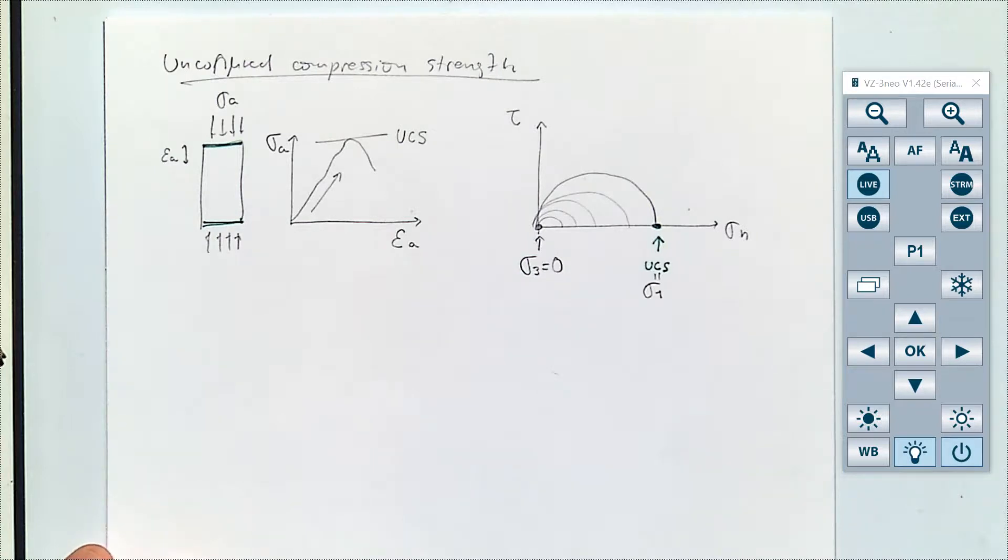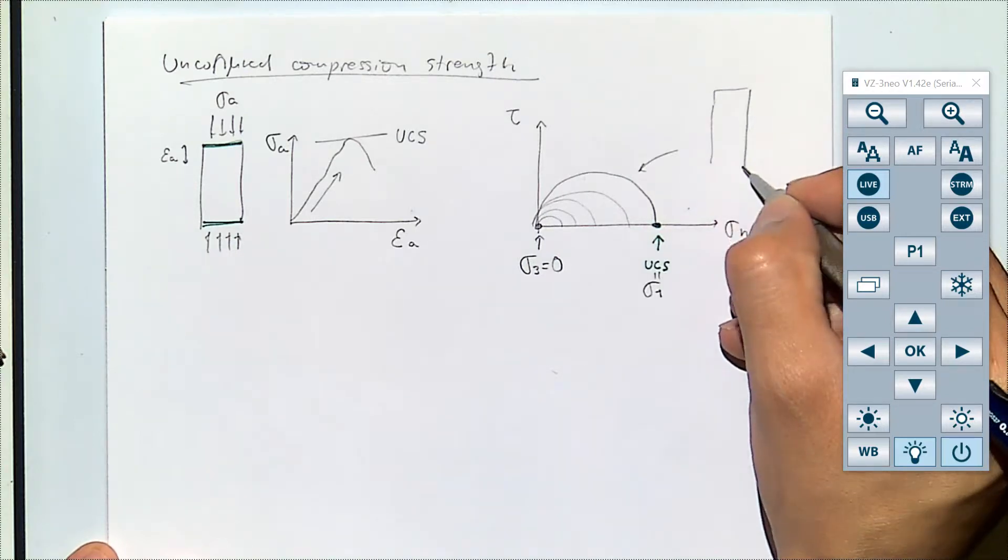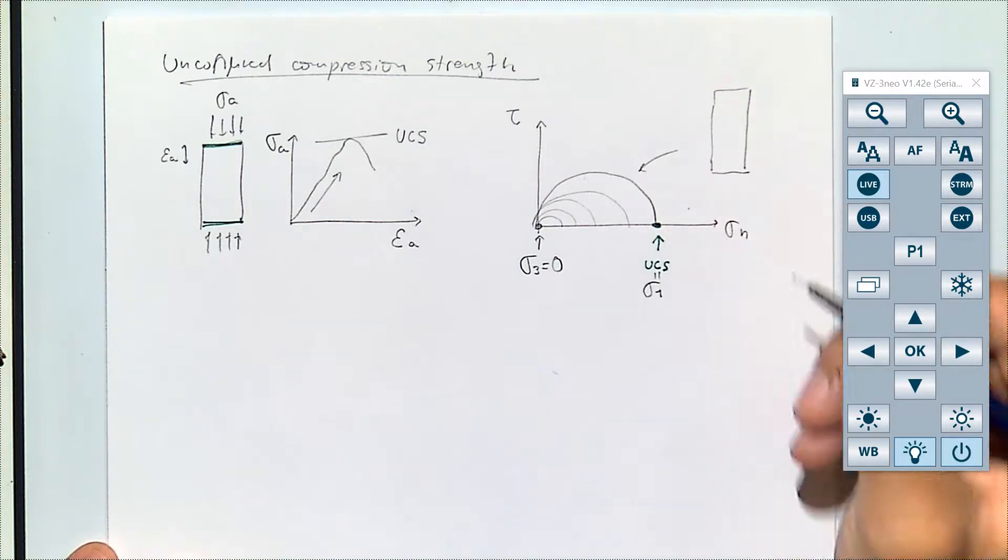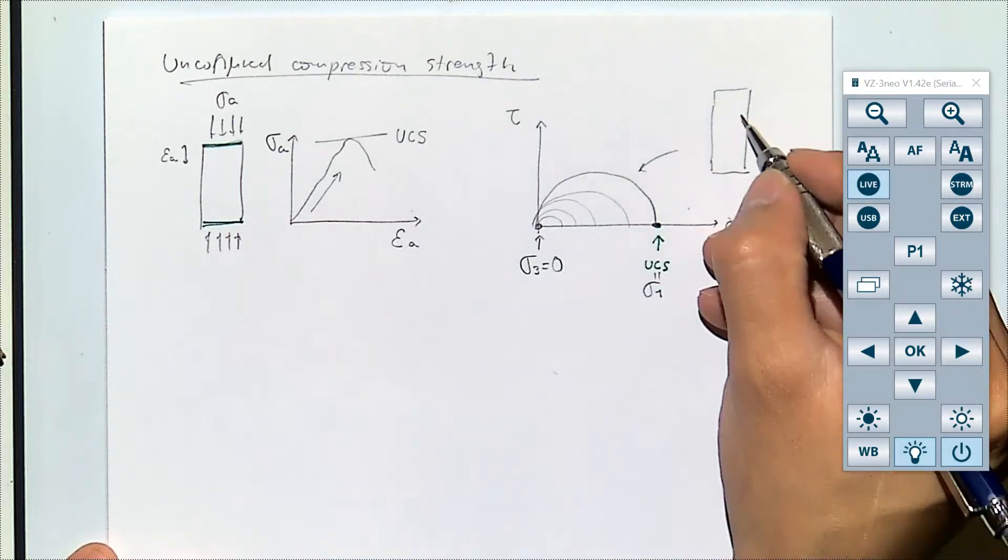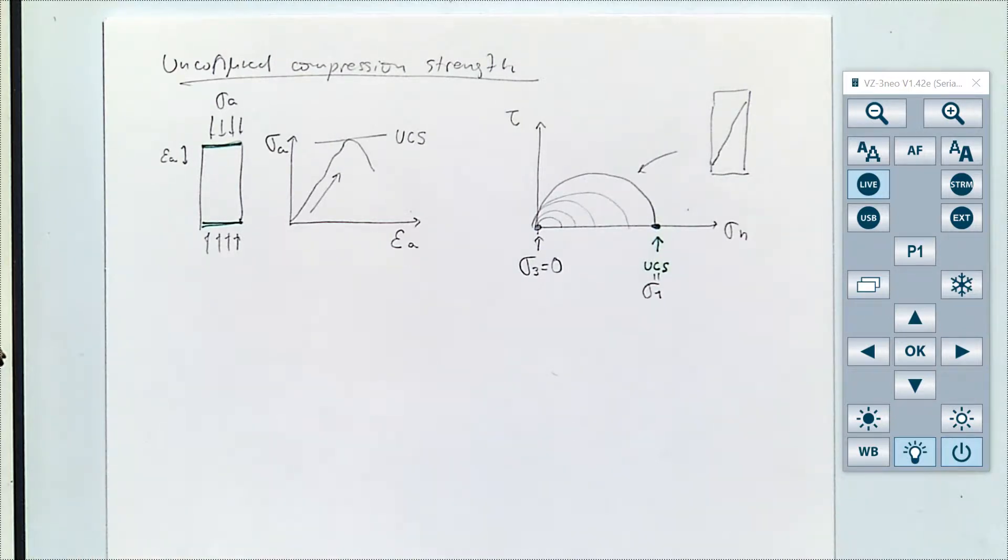But what you should remember from this case is that when you get to failure, although this one is unconfined compression strength, ideally if your sample is tall enough this will develop a failure in shear. So it's a loading in compression but it's a failure in shear.